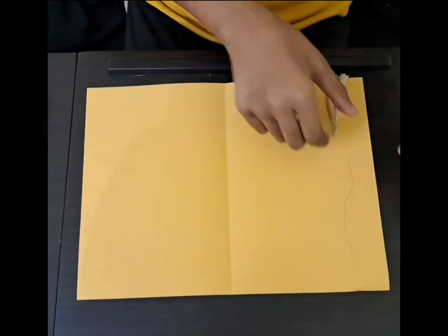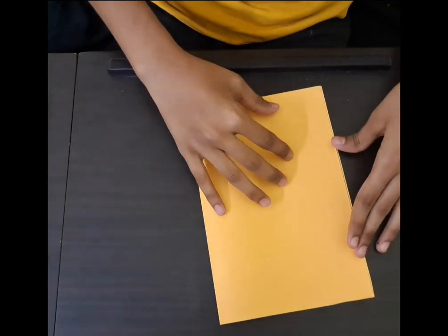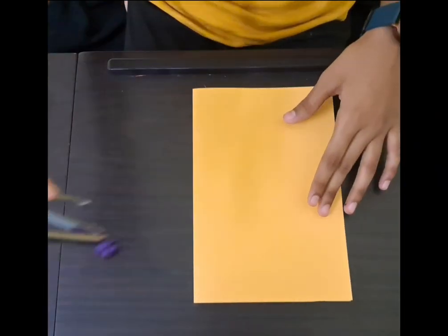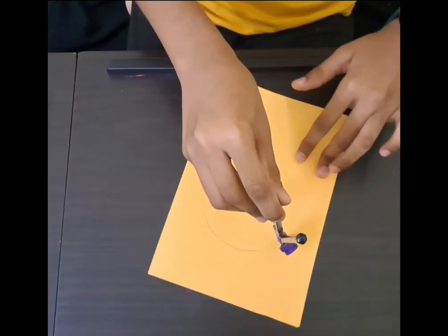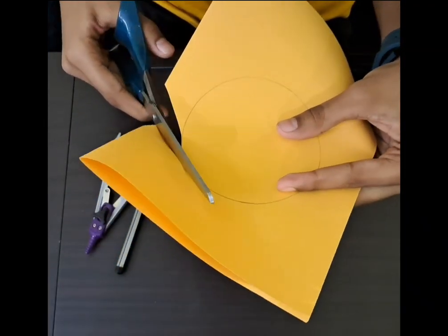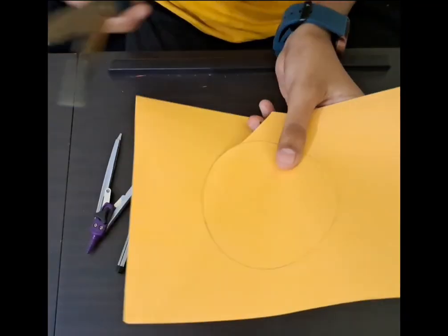Take an A4 sheet of your choice, fold it into half, take a compass and draw a circle with any radius. Cut with scissors along the circumference of the circle.